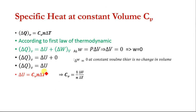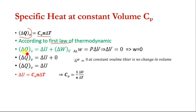Now we deal with specific heat at constant volume. We know that del Q_V equal to C_V n del T, where C_V is the specific heat at constant volume. According to the first law of thermodynamics, del Q equals the change in internal energy of the system plus the work done by the system. We also know that W is equal to P del V.